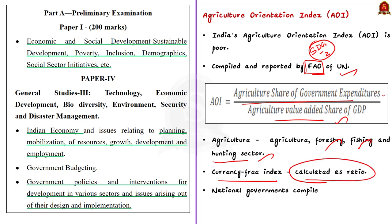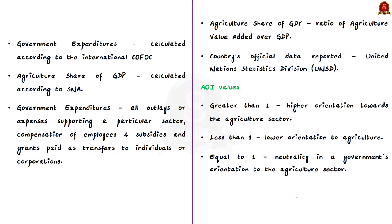For this calculation, national governments are requested to compile two things: firstly, government expenditures are to be calculated according to the International Classification of Functions of Government; and secondly, the government share of GDP is to be calculated according to the System of National Accounts.